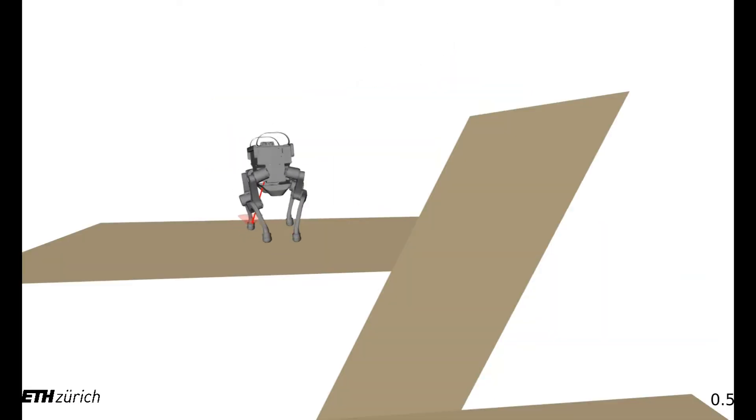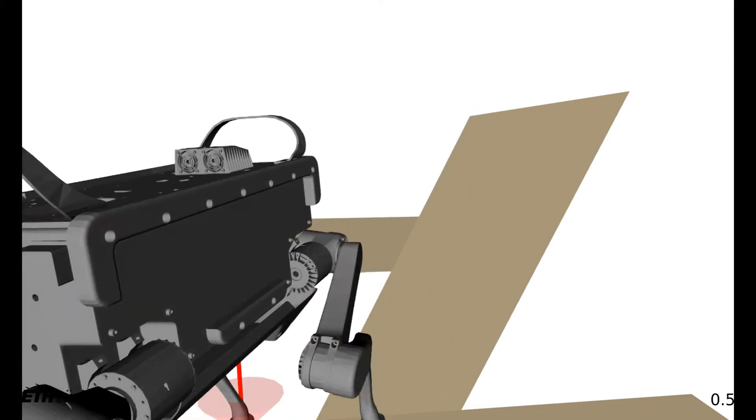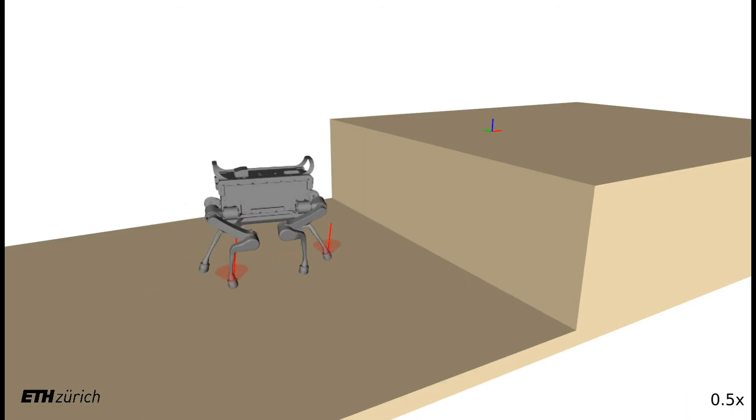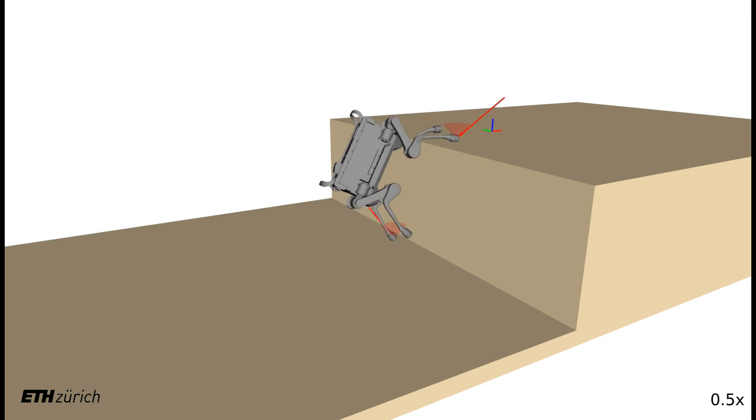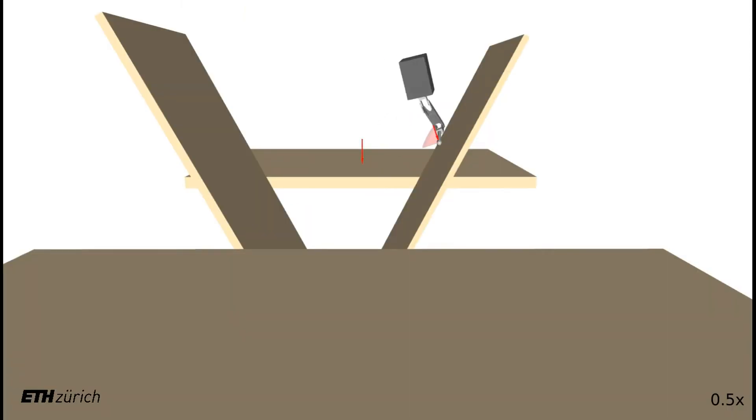In order to avoid slipping, the contact forces must lie inside a cone defined by the terrain and the friction coefficient. This requires the motion to be adapted to work with only the restricted range of possible contact forces. Since these physical laws are modeled in the problem, the algorithm can use tilted walls to cross an otherwise untraversable gap.